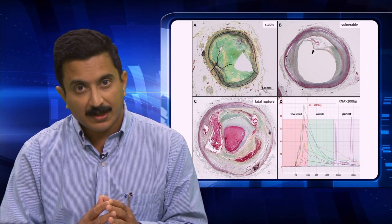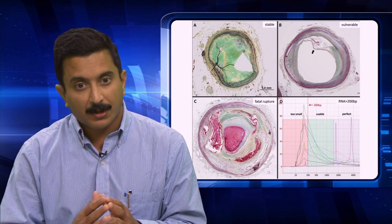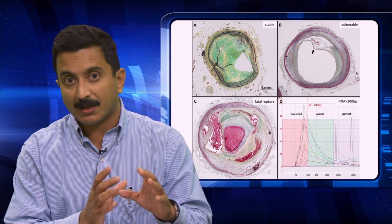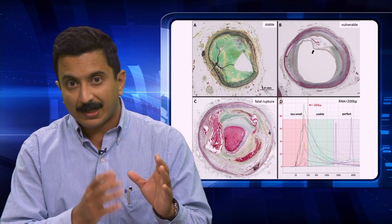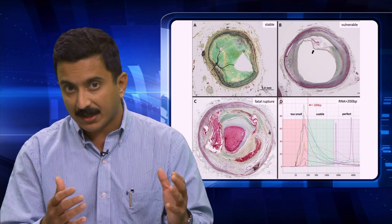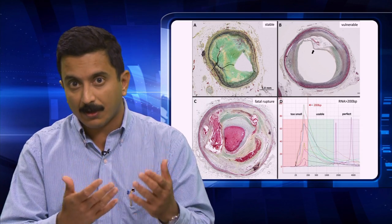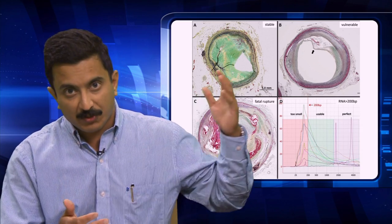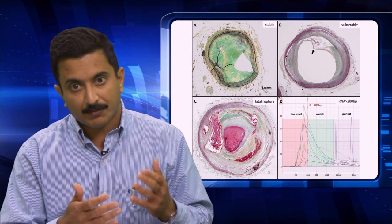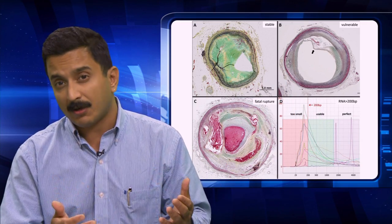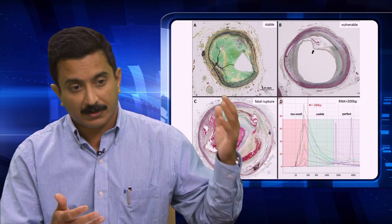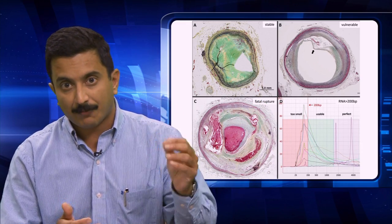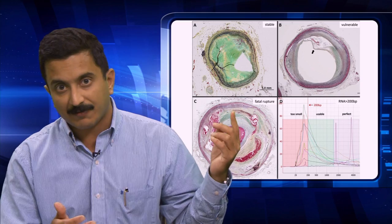In panel A, what you see is what we call stable plaques, and these are plaques where although the artery has become narrower, the plaque itself is at lesser risk for rupturing and releasing its contents into the lumen. Contrasting with this is what we see in panel B, which are much more dangerous — vulnerable plaques — and what distinguishes them from stable plaques is the thin fibrous cap, which you'll see right above the black arrow.